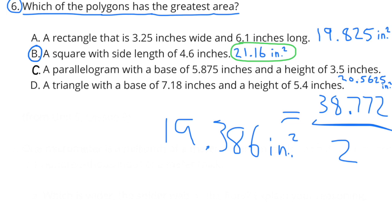C: A parallelogram with a base of 5.875 inches and a height of 3.5 inches. That comes to a little more than 20 inches squared. And finally D: A triangle with a base of 7.18 inches and a height of 5.4 inches. That comes to just a little bit more than 19 inches squared. So the greatest area is B, the square with the side length of 4.6 inches.